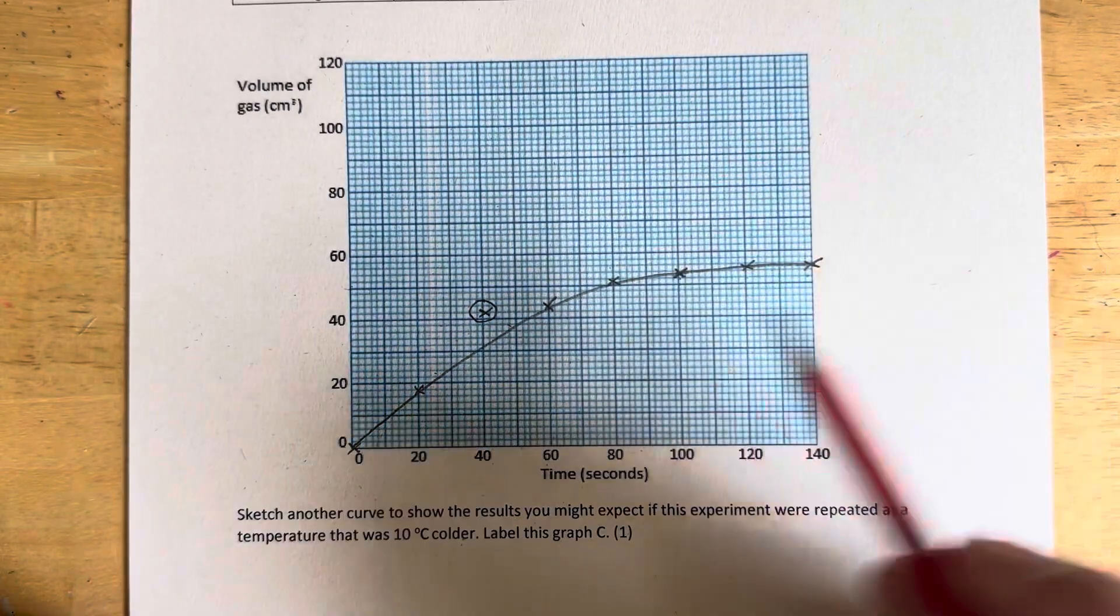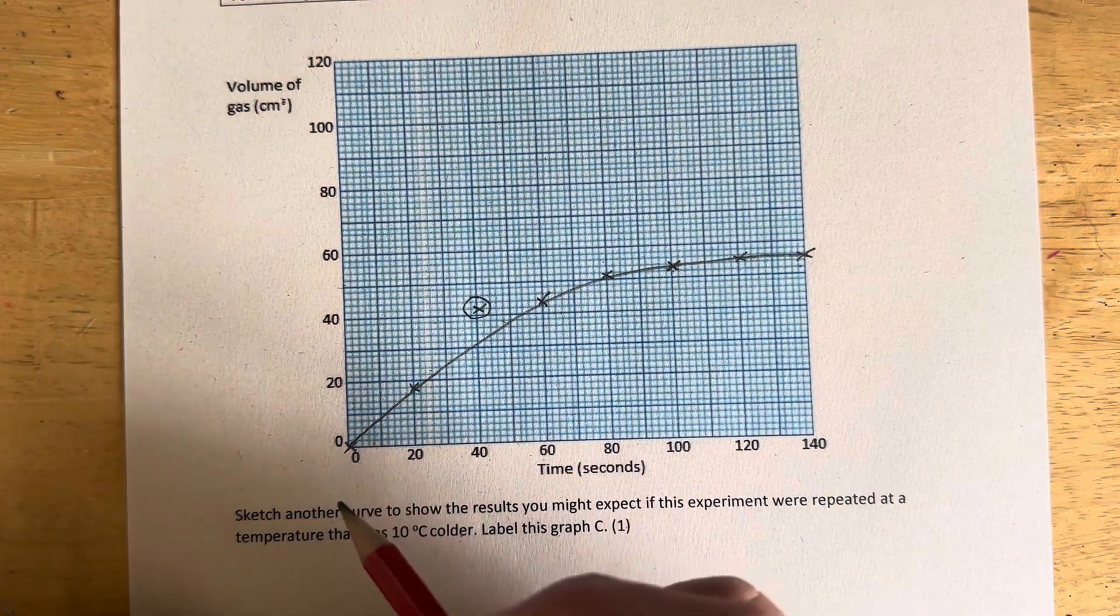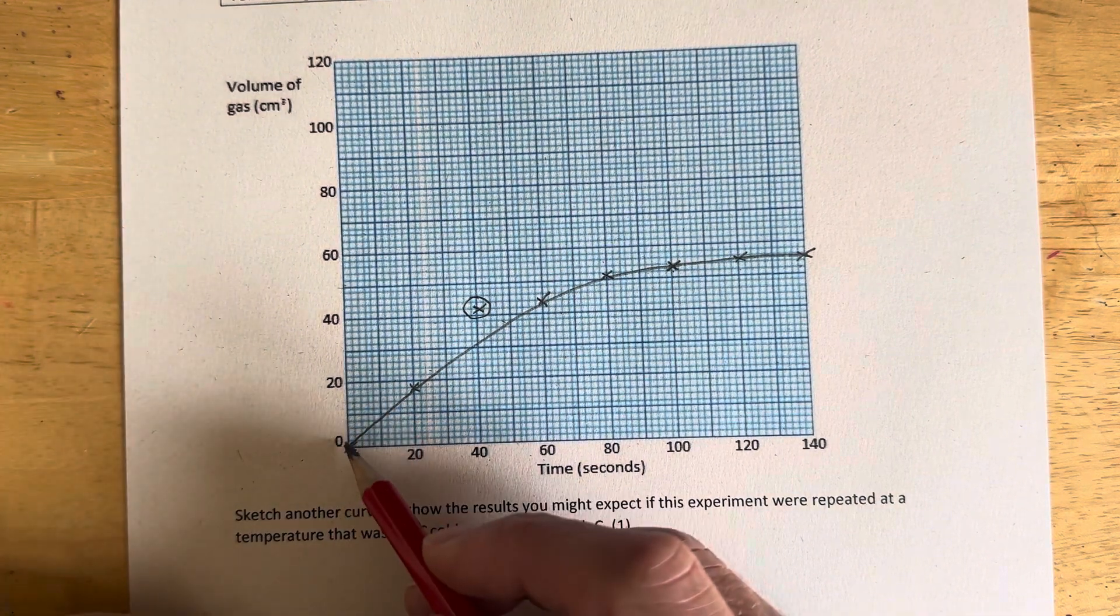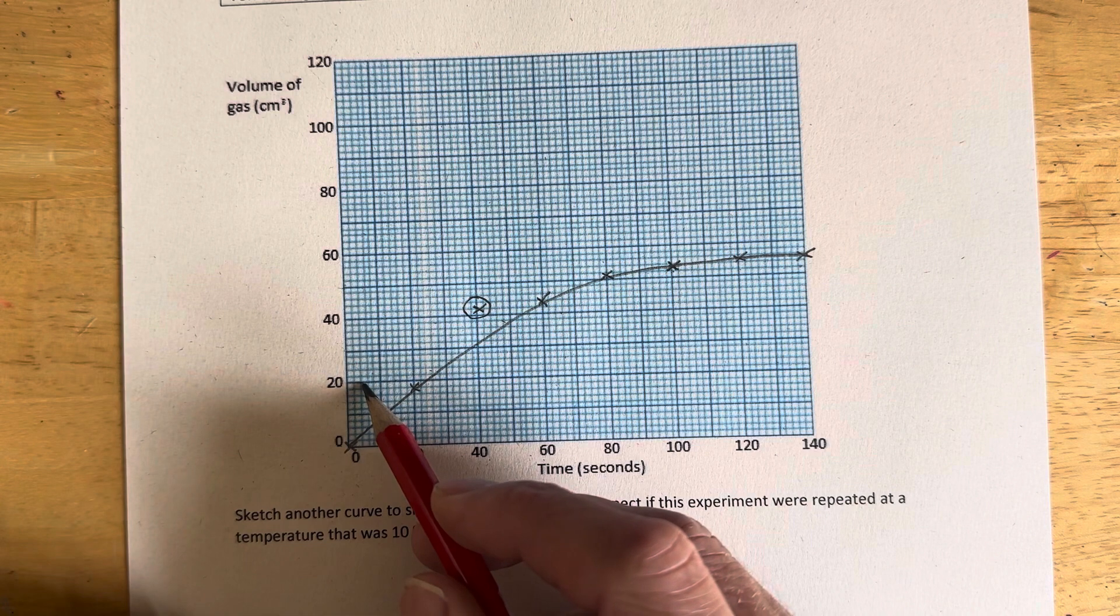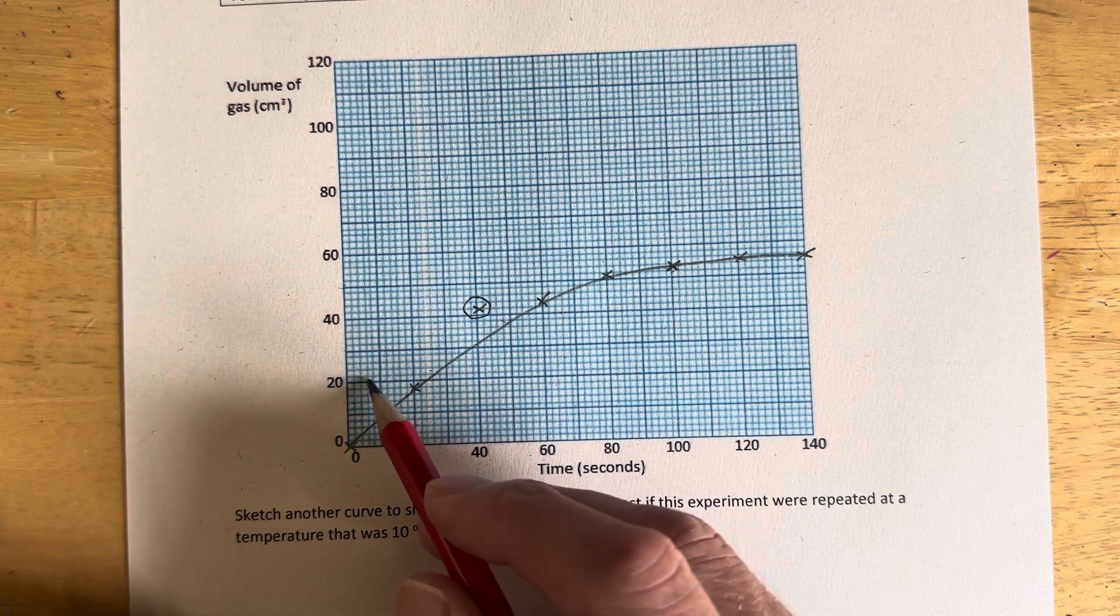So it's the same experiment, but 10 degrees colder. We have to ask ourselves two questions for this. The first question is, is our initial rate going to be steeper or less steep? The gradient of the initial curve is going to be steeper or less steep.